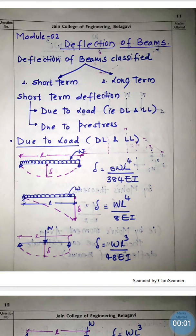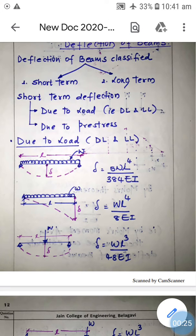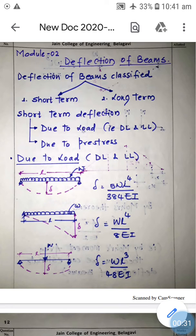Welcome back students for today's lecture, Lecture 2 on deflection of beams, which is part of Module 2 for the subject Design of Prestressed Concrete Structures. In the previous lecture we discussed what is deflection of beams, short-term deflection, long-term deflection, and different methods to calculate deflection of beams. In this lecture we are going to discuss the types of deflections and the equations to calculate deflections in prestressed concrete beams.